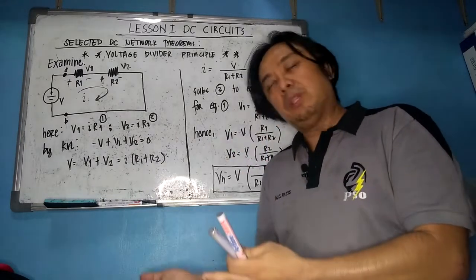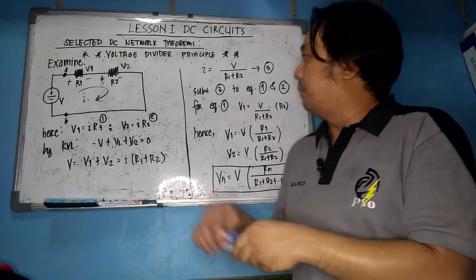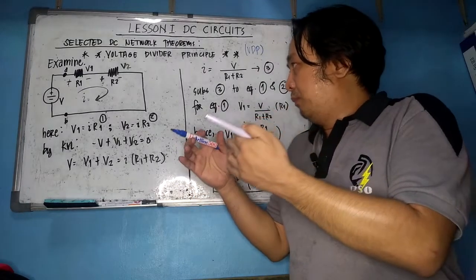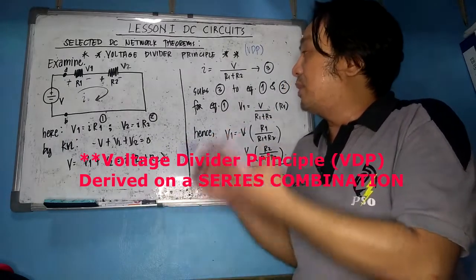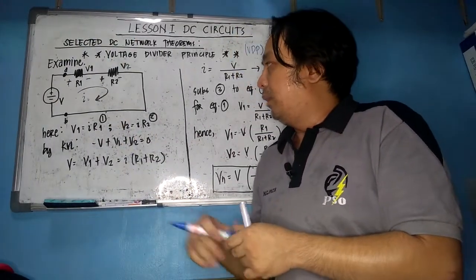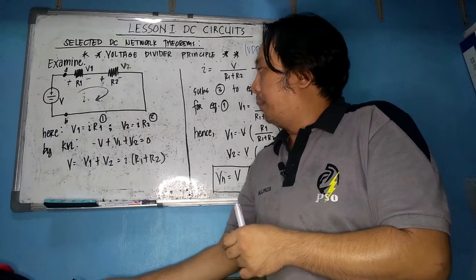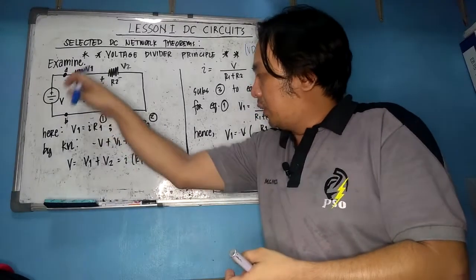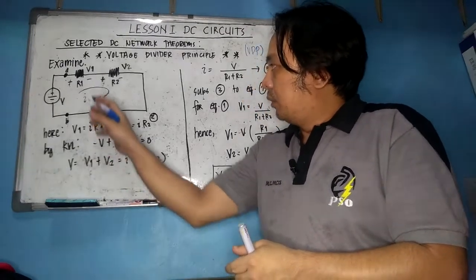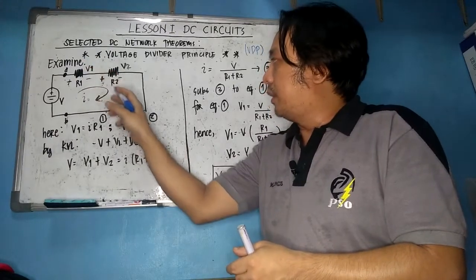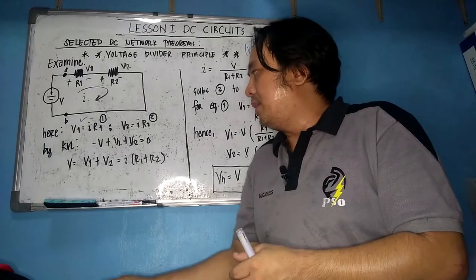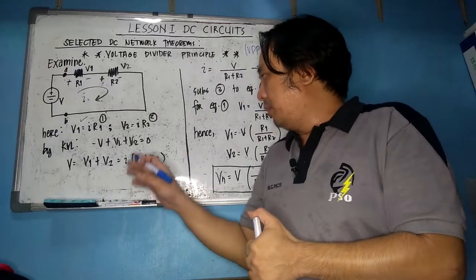Let's concentrate first on VDP — the voltage divider principle. The voltage divider principle is derived from a series combination. We go back to a series network: we have two resistances connected in series, a DC source V, and a current loop I. Using Ohm's law, we get V1 = I × R1 and V2 = I × R2 — these are equations 1 and 2 respectively.